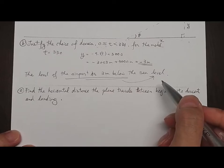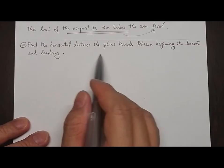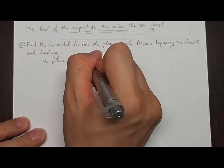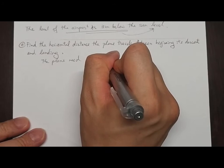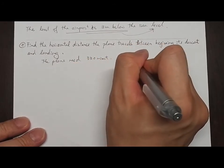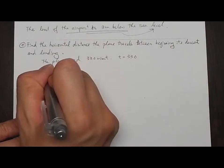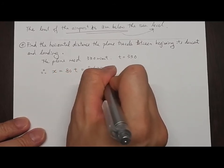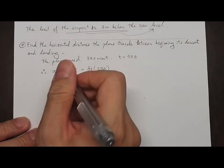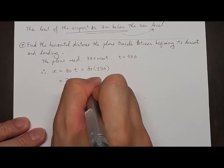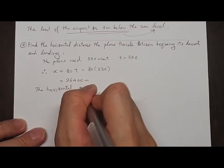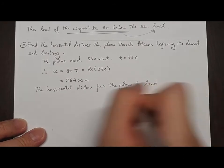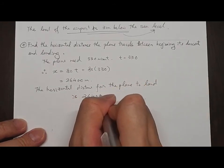Part c: Find the horizontal distance the plane travels between beginning its descent and landing. The plane needs 330 minutes to land, so substituting t equals 330 into x equals 80t gives x equals 80 × 330 equals 26,400 meters. The horizontal distance for the plane to land is 26,400 meters.